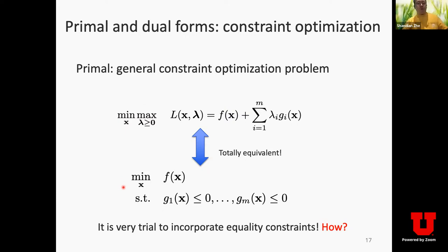Suppose we have a constraint optimization problem where we want to minimize objective function f(x) subject to a set of m constraints. Each constraint is specified by an inequality: g1(x) ≤ 0, g2(x) ≤ 0, until gm(x) ≤ 0. f and g1 through gm can be convex or non-convex functions — it doesn't matter. We call f(x) the objective function, and g1(x) through gm(x) the constraint functions.